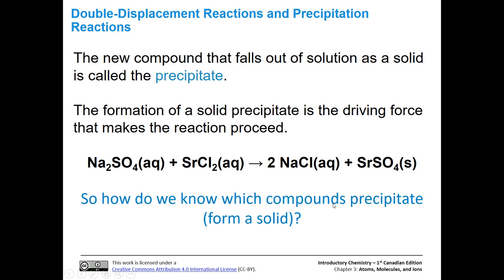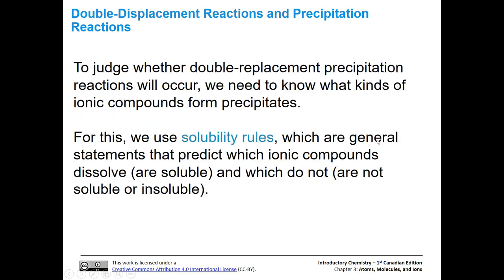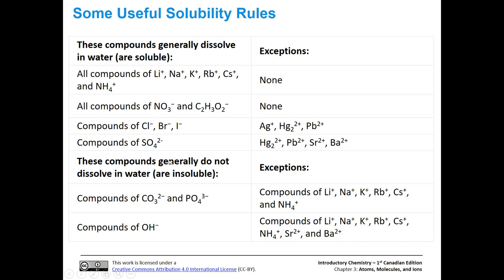How do we know which compounds precipitate and form a solid? That is where solubility rules come in. You've seen the chart of solubility rules - this is where we're going to actually use them. Those solubility rules tell us what kinds of ionic compounds form precipitates, which ones are soluble and dissolve in solution, and which ones are insoluble. Get very familiar with them - not necessarily memorize, but get to where you can use them easily.